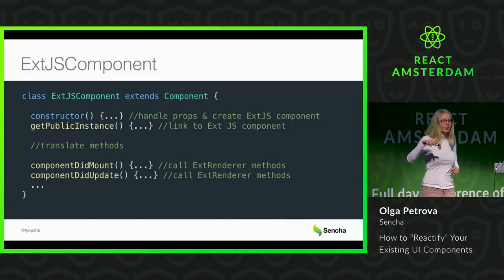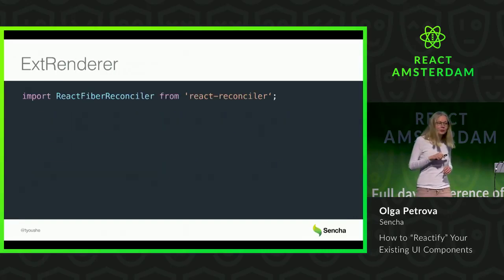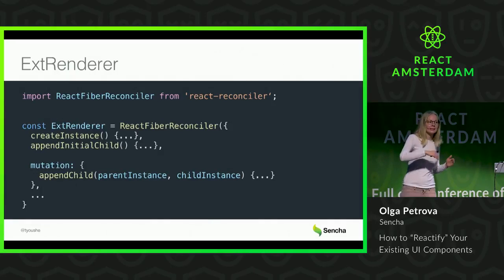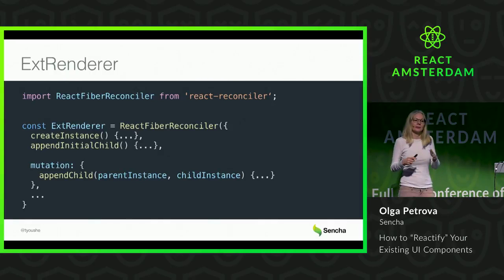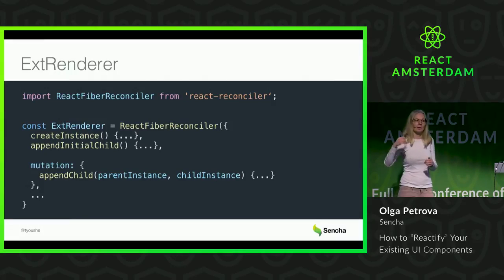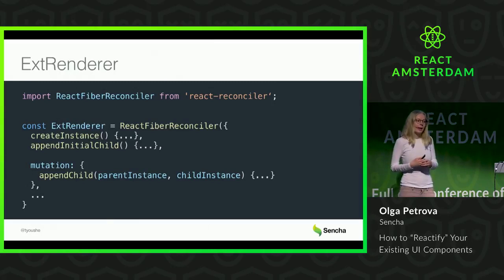Inside of these functions, you could call methods of XtRenderer, and XtRenderer will implement methods of the React reconciler — all of createInstance, appendInitialChild, appendChild, and other functions — and all the real magic will happen here. These functions will be responsible for actually embedding the exe.js component in the React component hierarchy. And that's it.